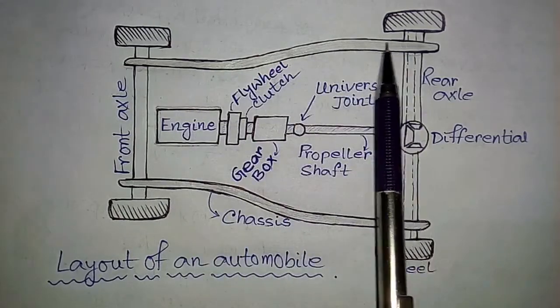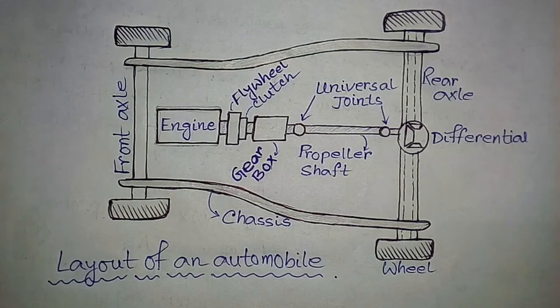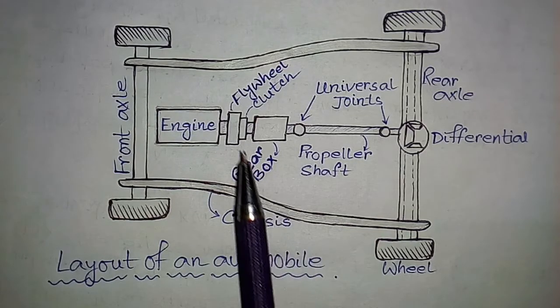This is the chassis or frame of the automobile on which the engine and other components are kept. We know that torque is produced by the engine, which is the power unit of the automobile.